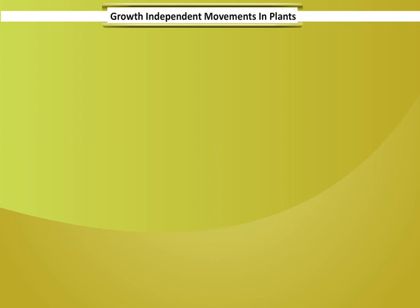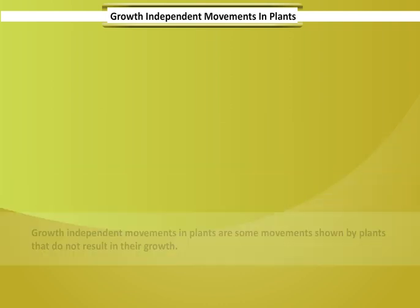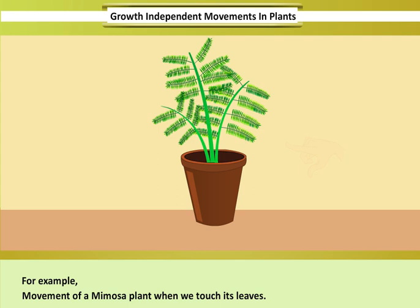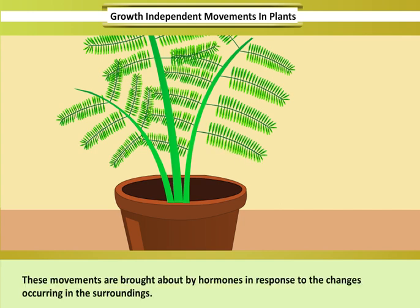Growth independent movements in plants are some movements shown by plants that do not result in their growth. For example, movement of a mimosa plant when they touch its leaves. These movements are brought about by hormones in response to the changes occurring in the surroundings.